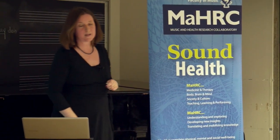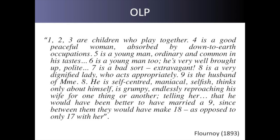This is not new. A book written in 1893 by Flournoy, a Swiss psychologist, describes exactly the same phenomenon. One synesthete described: one, two, three are children who play together; four is a good, peaceful woman absorbed by down-to-earth occupations; five is a young man, ordinary and common in his taste; six is a young man too, very well brought up and polite; seven is a bad sort, extravagant; eight is a very dignified lady who acts appropriately; and nine — my favourite — is the husband of Madame Eight. He is self-centred and selfish, thinks only of himself, is grumpy, endlessly reproaching his wife, telling her he would have been much better to have married a nine, because between them they would have made 18 as opposed to only 17 with her.